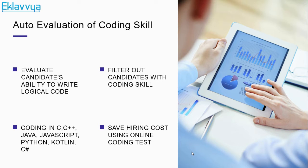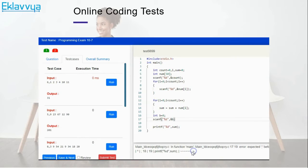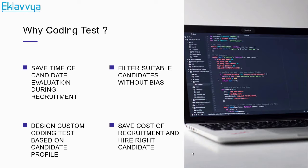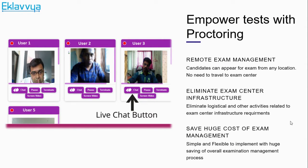You can filter out candidates with suitable coding skills and easily save hiring cost associated with online coding tests. The platform provides a highly user-friendly interface for candidates to attempt online coding tests remotely using any browser in a secure manner. You can filter out suitable candidates without any bias, and empower tests with remote proctoring. There is also an advanced AI algorithm which helps with anti-cheating mechanisms as well as advanced facial recognition for remote online coding assessments.